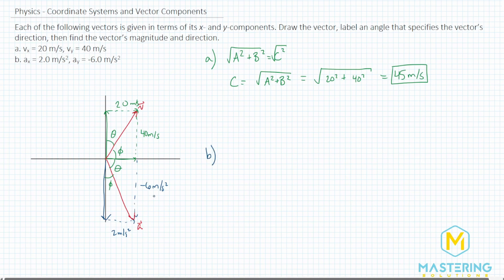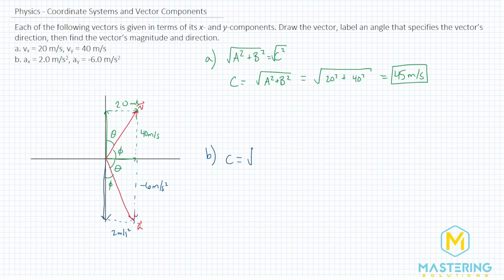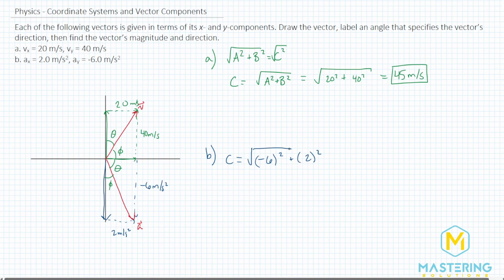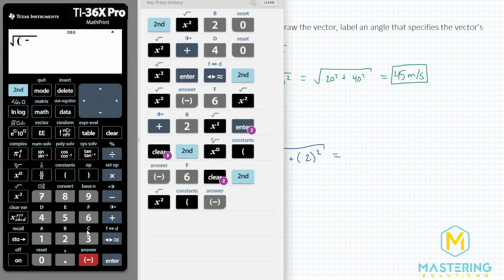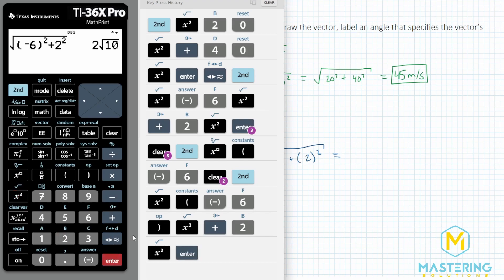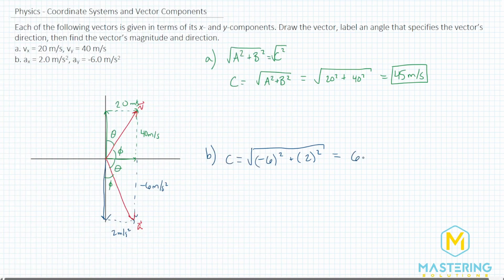For part b, the magnitude uses the same Pythagorean theorem formula: c = √(a² + b²). We have the square root of (−6)² + 2², both in meters per second squared. That gives us the square root of 36 + 4, which is 2√10, approximately 6.3 meters per second squared.